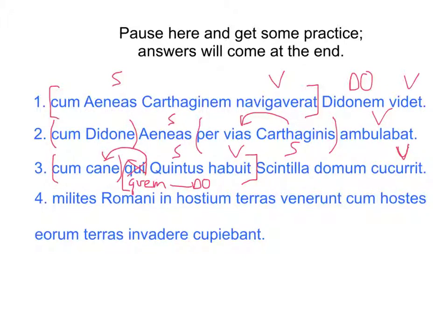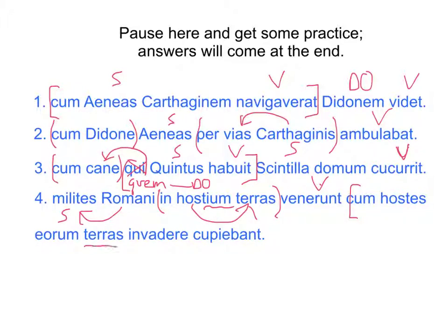Now I'm going to label underneath the words because I kind of ran out of space above there. 'Milites Romani' — it's an adjective modifying 'milites,' which is the subject. 'In hostium terras' — 'hostium' is genitive modifying 'terras,' and then that clause ends. Verb: 'venerunt.' Then cum hostes — cum is followed not by an ablative, so probably a clause marker. 'Hostes' ends up being the subject. 'Eorum' modifies either 'hostes' or 'terras.' We have a dative and an infinitive. So: enemies were going to invade their lands. Probably 'their lands' — hostes is the subject. End the clause there.